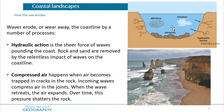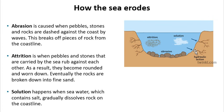To recap: hydraulic action is the sheer force of waves crashing off the coastline. Compressed air is when cracks fill up with air, get compressed by the waves, causing pressure that enlarges and breaks the cracks. Abrasion is when rocks and stones carried in the wave smack off your cliff or coastline and break it down. Attrition is when rocks smack off each other and wear each other down, eventually forming sand. Finally, solution is when salt minerals within the seawater erode rocks and the coastline — you cannot see the salt, but it's there.